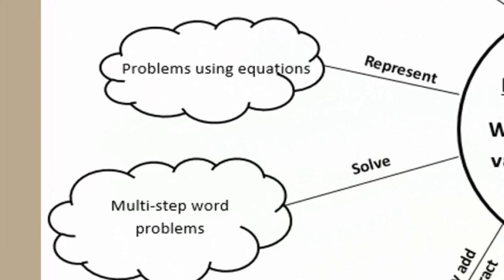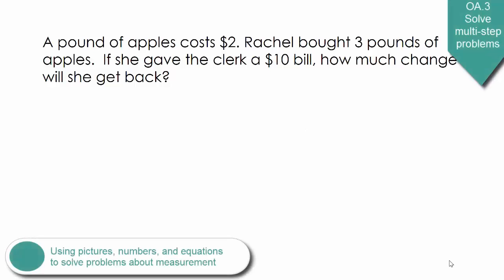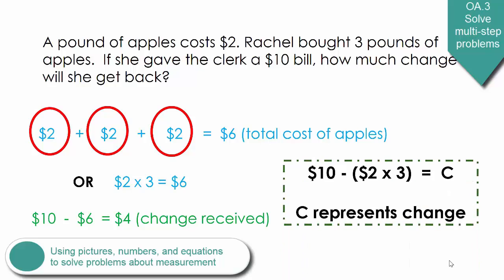Next is solving word problems and representing problems with equations. Here is a problem that requires multiple steps. A pound of apples costs $2. Rachel bought 3 pounds of apples. If she gave the clerk a $10 bill, how much change will she get back? While solving problems like this, students are encouraged to use pictures, numbers, and words to show their thinking. Additionally, students are asked to write equations such as this to represent the problem. In this equation, the letter C is used to represent the unknown.